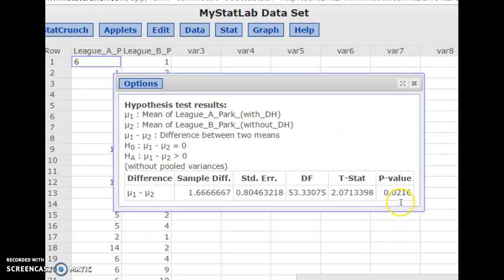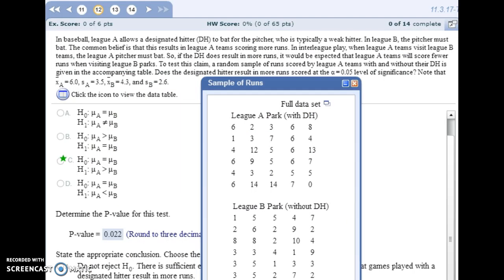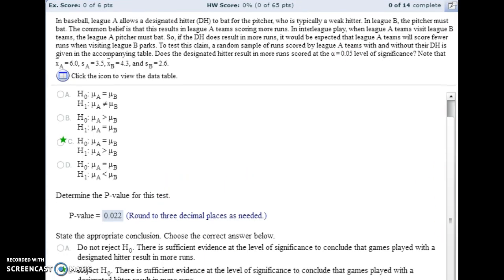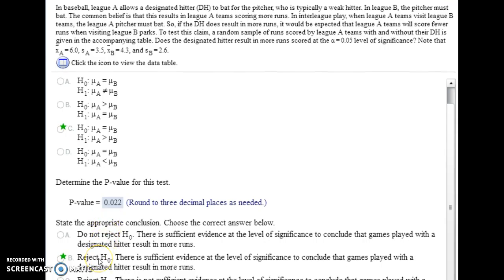It gives us our p-value of 0.0216, so if our means were actually equal, there's about a two percent chance that we would have pooled samples like the ones we did. Not a very high likelihood, and we were checking with our alpha being 0.05, and since 0.02 is less than 0.05, we are going to reject our null hypothesis.